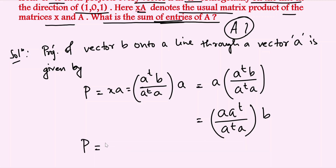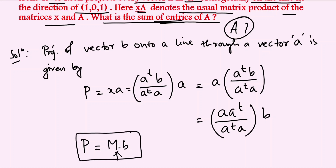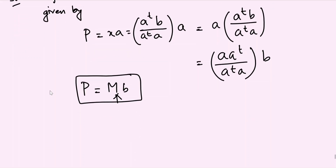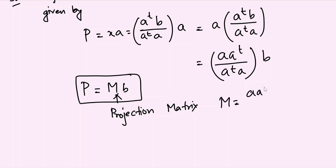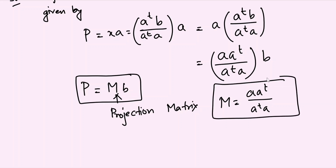This matrix M = aaᵀ/(aᵀa) is called the projection matrix. Given that a = (1, 0, 1)ᵀ, and aᵀ = [1, 0, 1], we need to calculate aaᵀ and aᵀa.